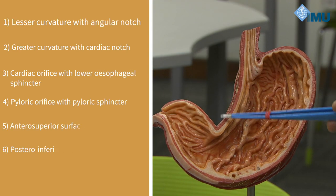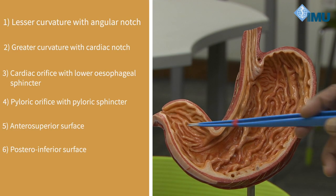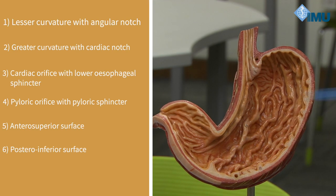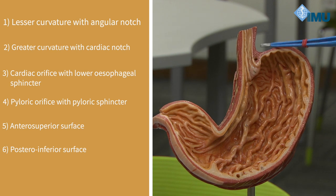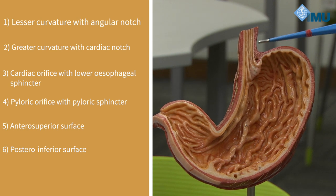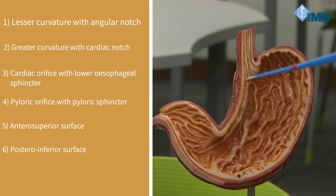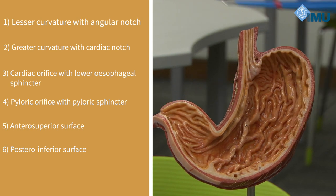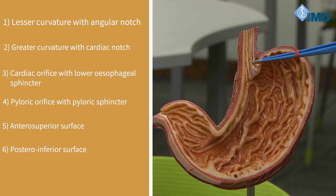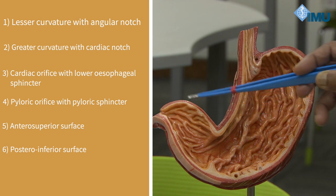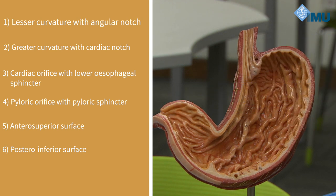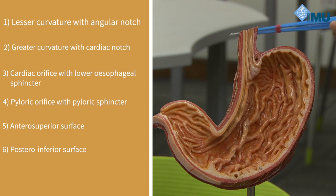On the lesser curvature is the angular notch and on the greater curvature is the cardiac notch. There are two orifices: the cardiac orifice and the pyloric orifice — the lower esophageal sphincter and the pyloric sphincter. The stomach has an anterosuperior surface and a posteroinferior surface.